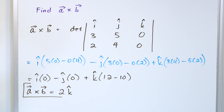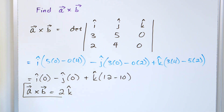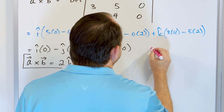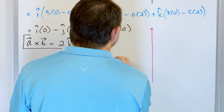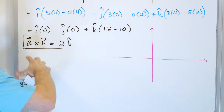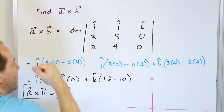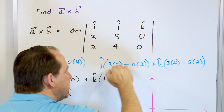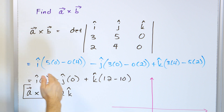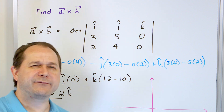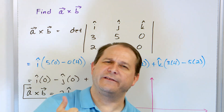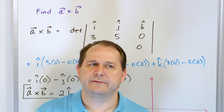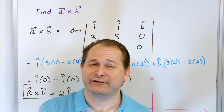Let's do a sanity check. You do have to be careful and practice the determinant technique, but once you get it, you don't have to wonder about the right-hand rule direction or worry about making those mistakes. Vector A is 3i + 5j, so it lies in the XY plane; vector B is 2i + 4j, also in the XY plane. Both vectors are plotted in the XY plane — vector A points up and to the right at roughly (3, 5) and vector B at roughly (2, 4).